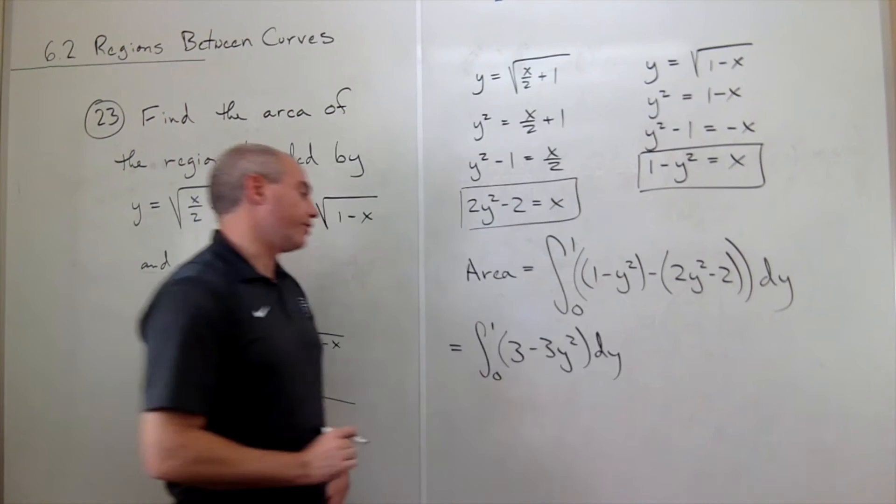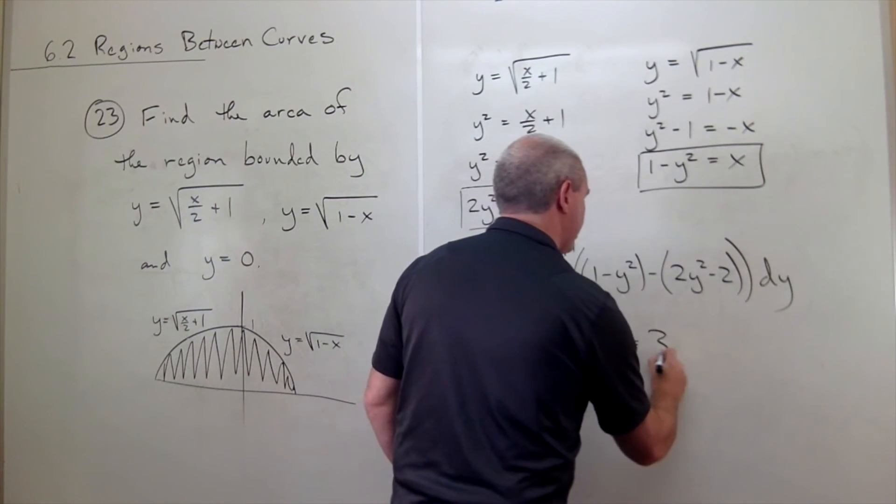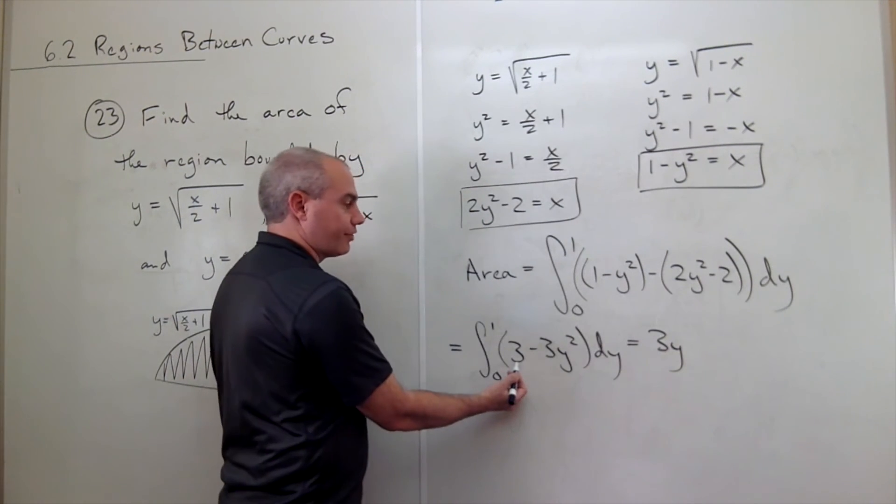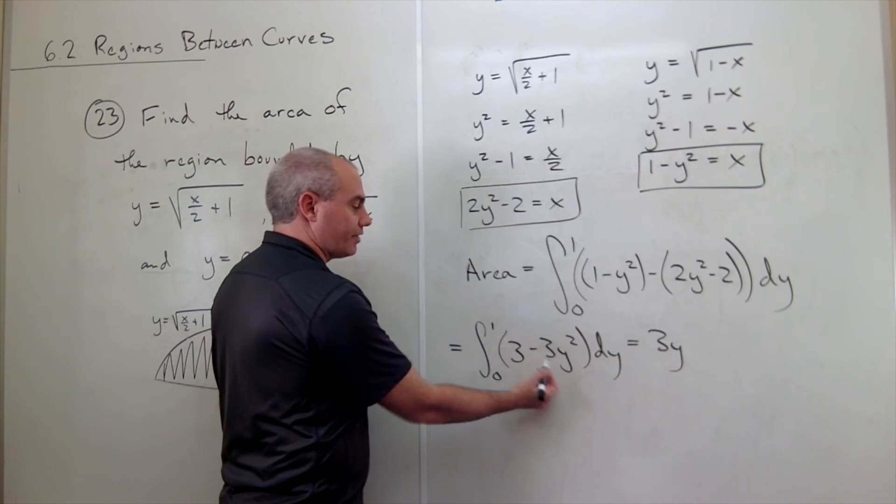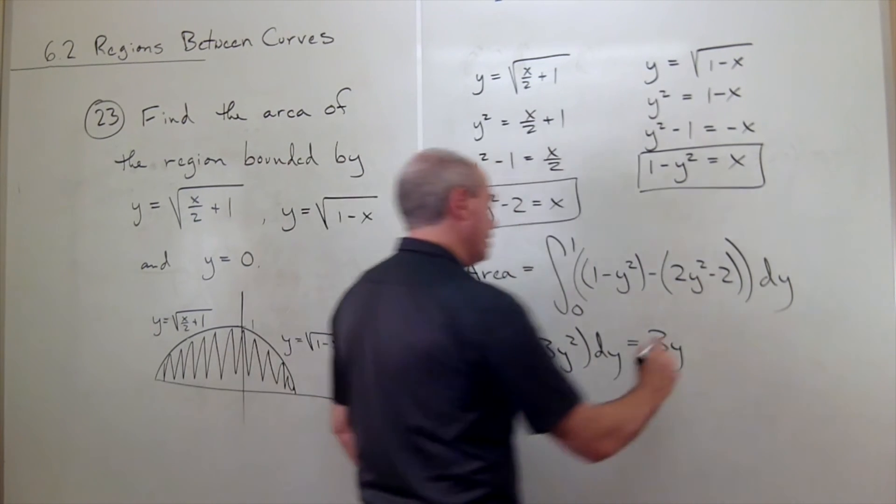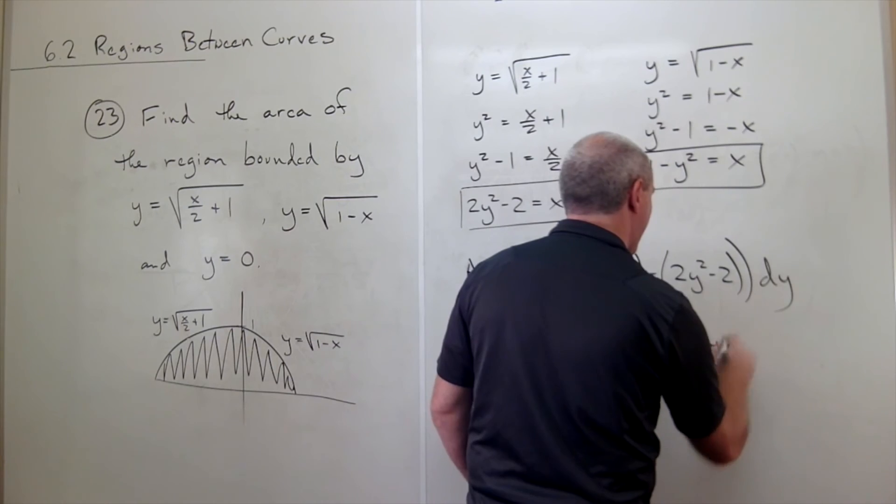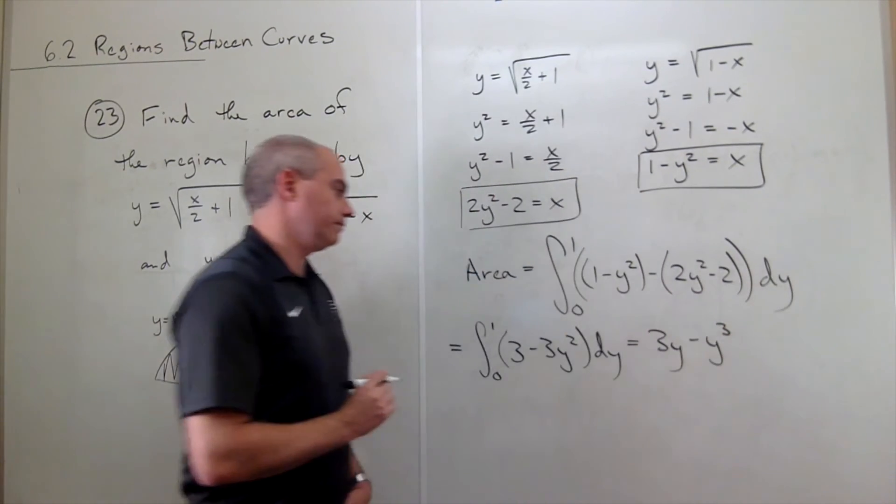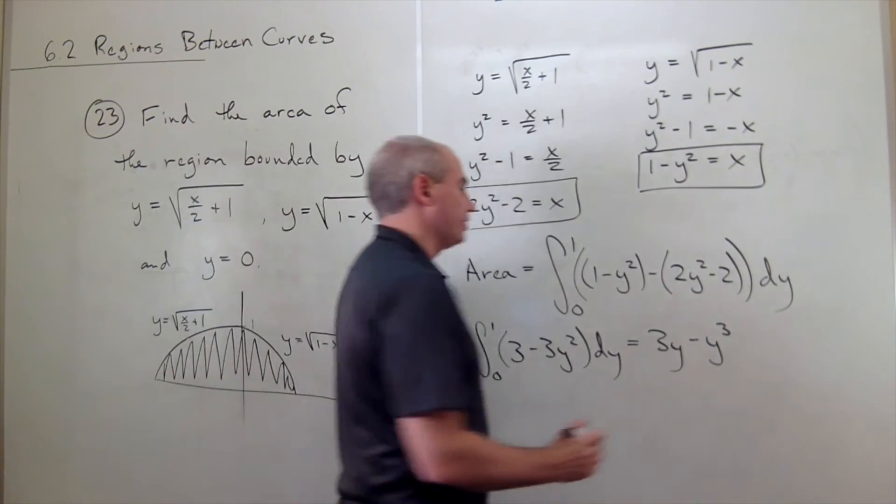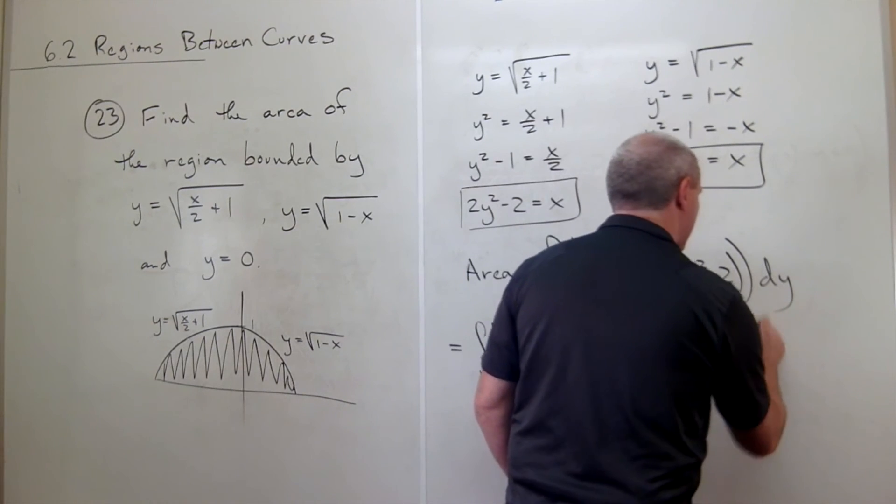Let's take the antiderivative, we get 3y, that's the antiderivative of 3, and the antiderivative of negative 3y squared would be negative y cubed. That's going to be evaluated from 0 to 1.